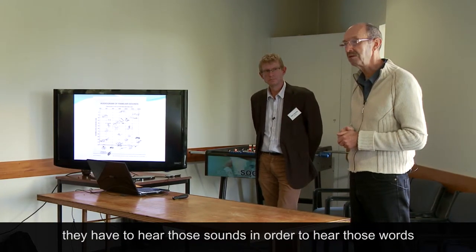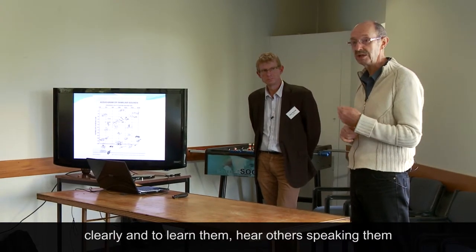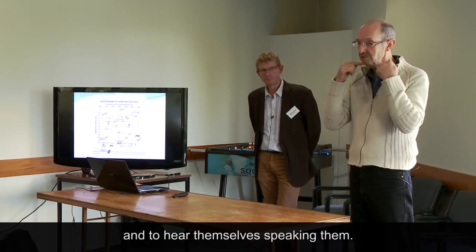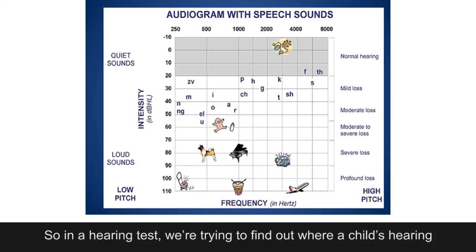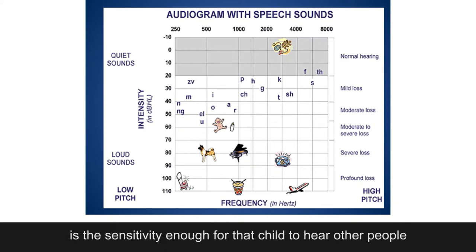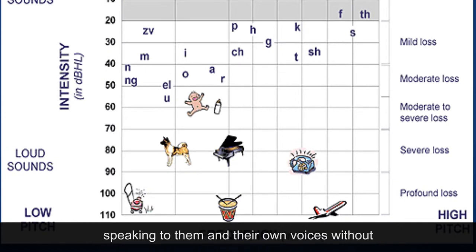And they have to hear those sounds in order to hear those words clearly and to learn them — hear others speaking them and to hear themselves speaking them. So in a hearing test, we're trying to find out where a child's hearing thresholds are, and are they sufficiently low — is the sensitivity enough for that child to hear other people speaking to them and their own voices, without the need for any assistance.